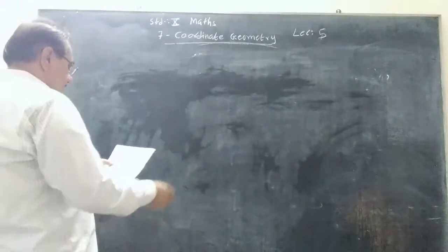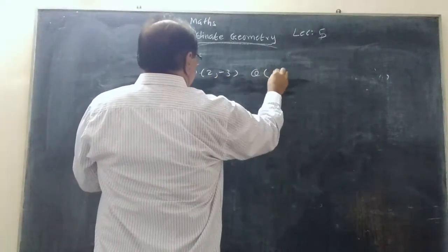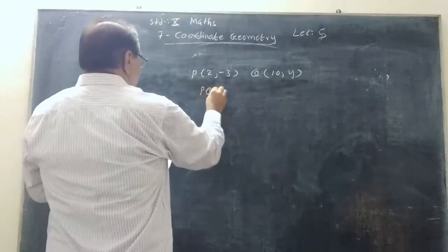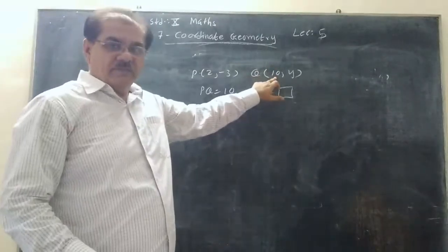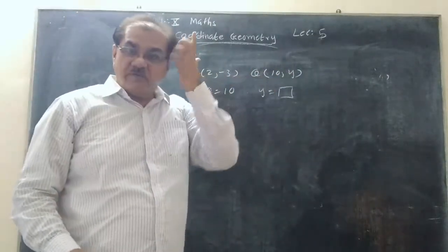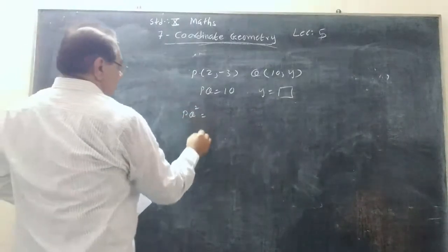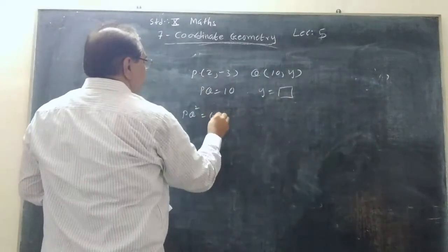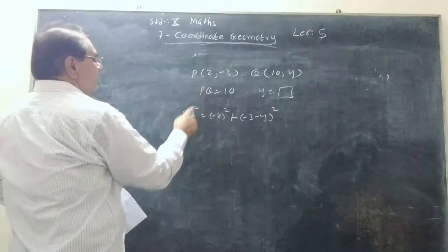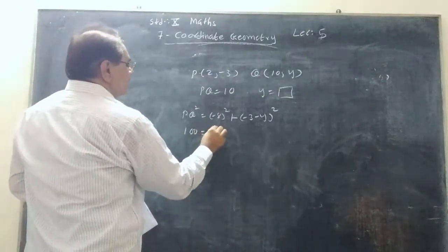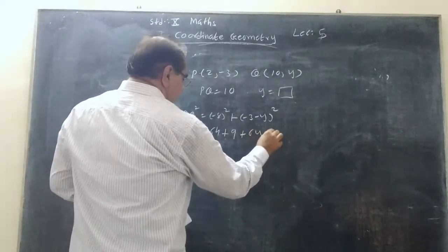You have to find the value of y. You are given two points P(2, -3) and Q(10, y) and the distance PQ is given as 10. Then what is the value of y? So again, PQ² = (2-10)² + (-3-y)² = (-8)² + (-3-y)². PQ is 10, so PQ² = 100. Therefore: 100 = 64 + 9 + 6y + y².